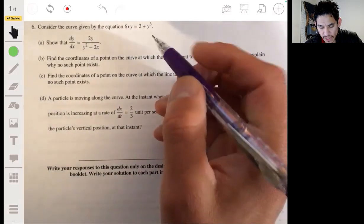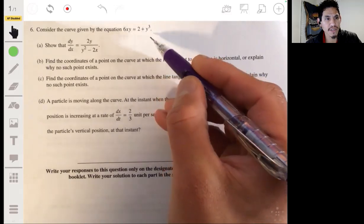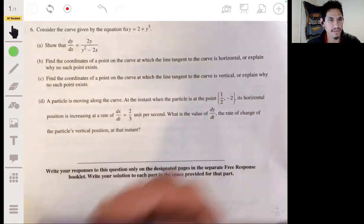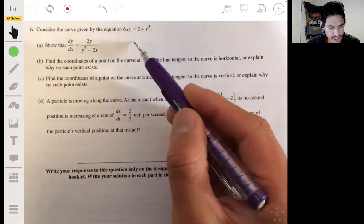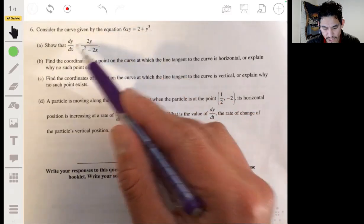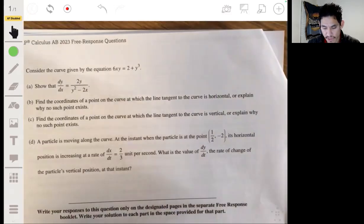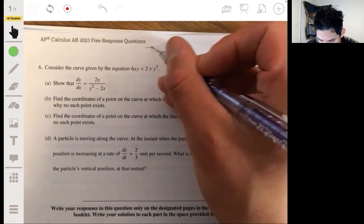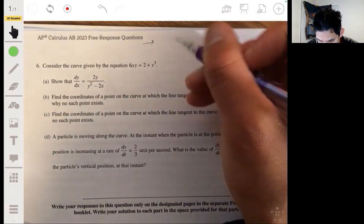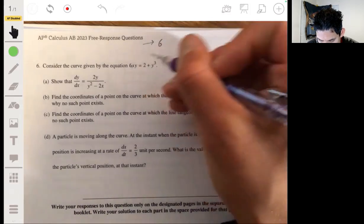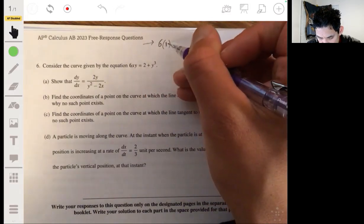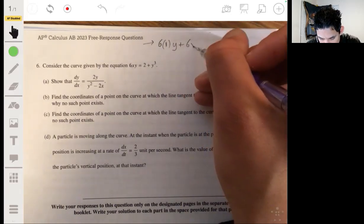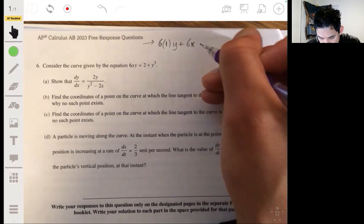So we have that the curve given by the equation 6xy equals 2 plus y cubed. We got to show that dy/dx is equal to 2y over y squared minus 2x. So what we're going to do is implicit differentiation where we're going to basically solve for dy/dx. I'm going to try to squeeze it up here. So this is going to be product rule.